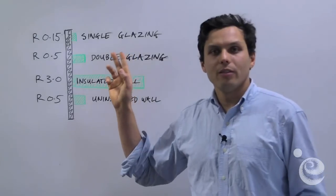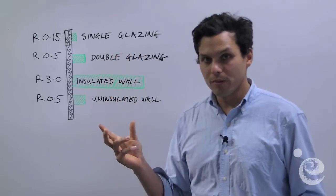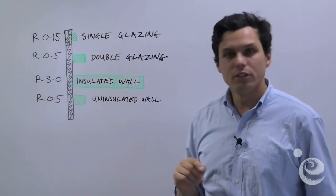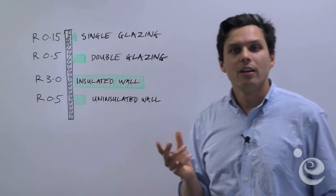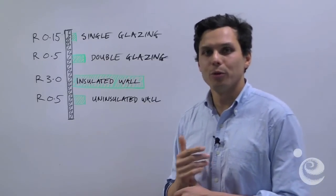Now if you look at the R value of single glazing, that's the worst performing of the lot. It's only got an R value of 0.15, about 20 times worse than an insulated wall. So that's going to let out 20 times more heat than an insulated wall basically.